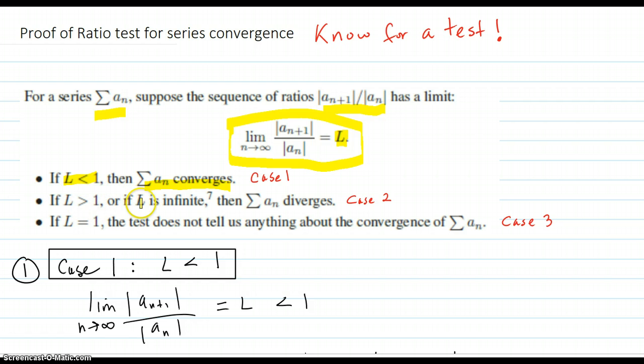If L is greater than 1, or if L is infinite, then a_n diverges. That's case 2. Case 3 is if L turns out to be equal to 1, then the test is inconclusive. And we'll show why that is. So first we're going to start off with case 1.